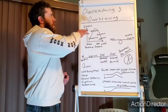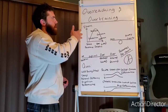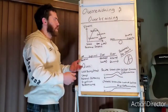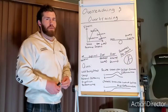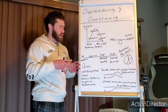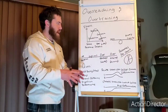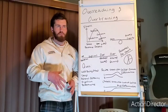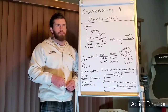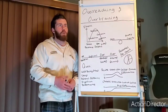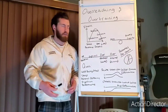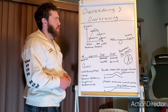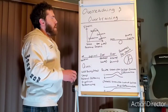The two terms are somewhat interchangeable, but one is just more extreme than the other. Breaking it down to a simple base: overreaching is an acute form, and overtraining is chronic. That's more or less what we're talking about.